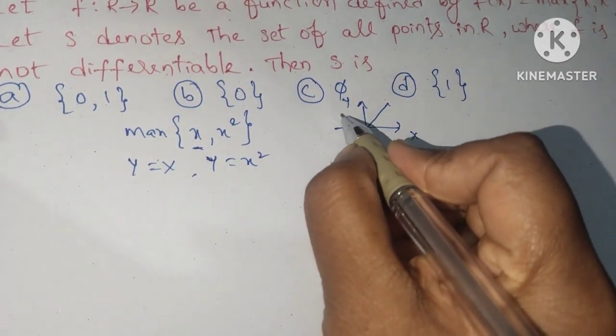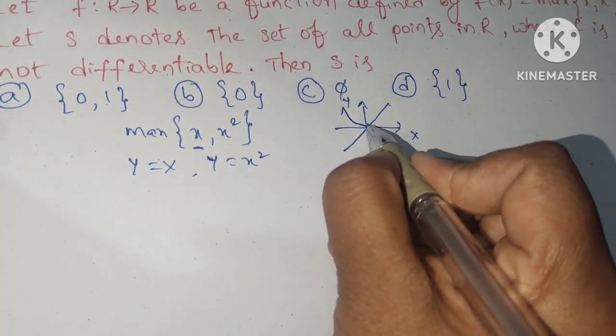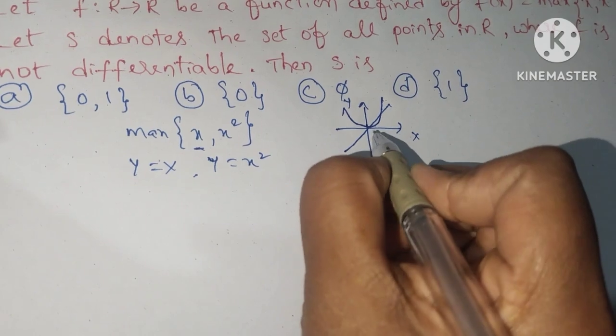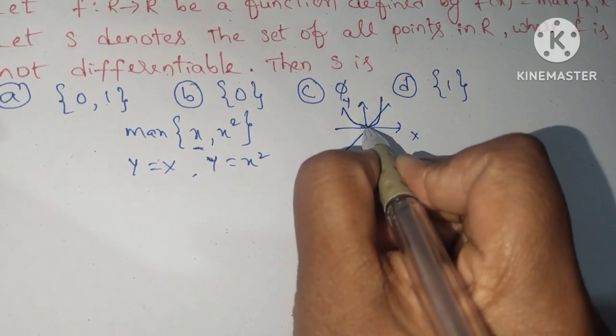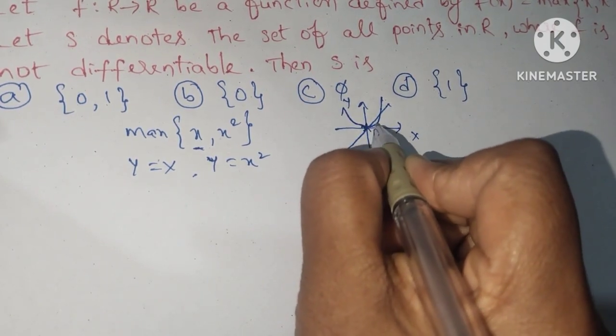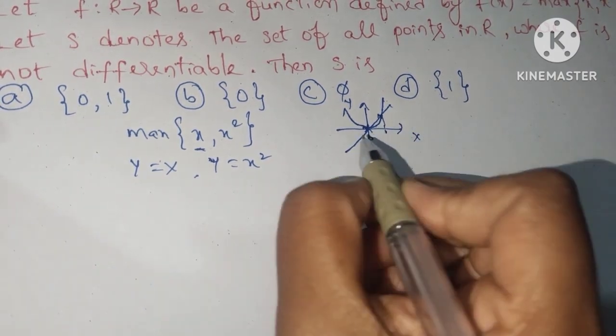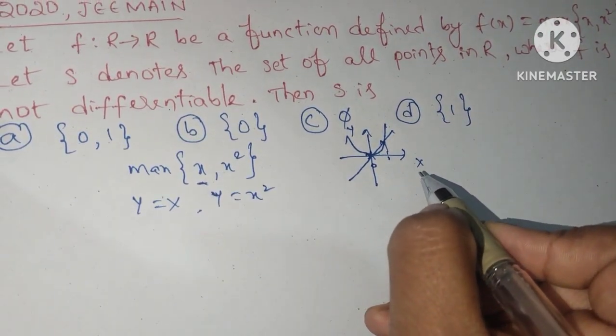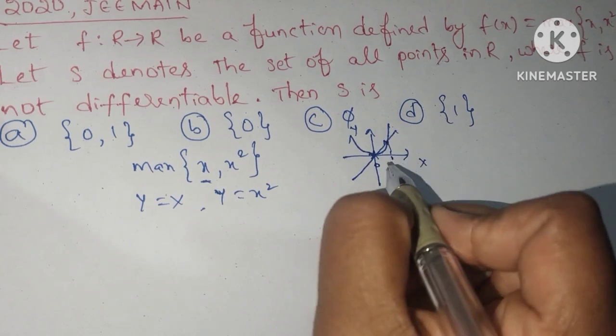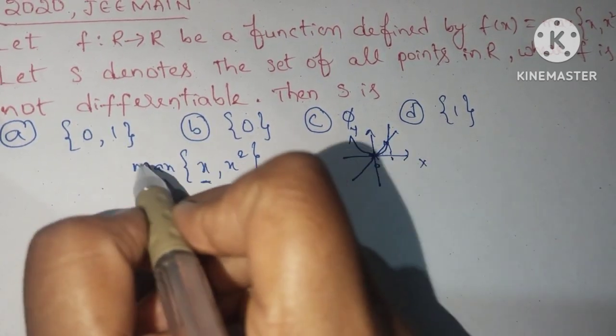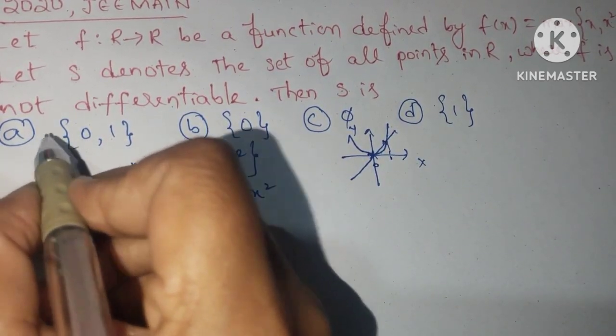So for x² we are getting parabola. So at how many places it touches here? One point at zero and one more this. So how many number of points? Two points. So at these two points it is not differentiable, so answer is this one.